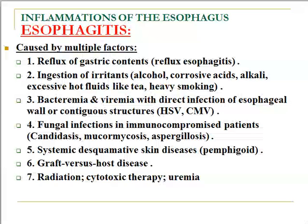Systemic desquamative skin diseases such as pemphigoid are primarily skin diseases but can be associated with esophageal disorder and inflammation. Graft versus host disease results in inflammatory processes elsewhere in the body, including the esophagus. Radiation, cytotoxic therapy, and uremia are also associated with esophagitis.